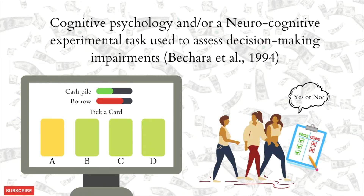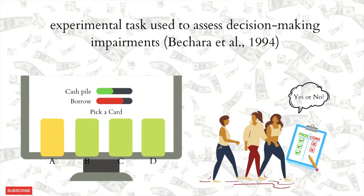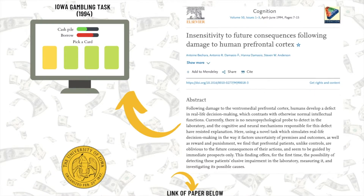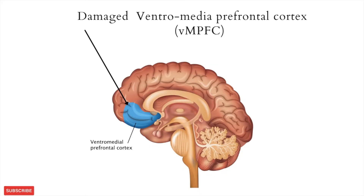The Iowa Gambling Task, or the IGT, is a very prominent cognitive psychology experimental paradigm used to account for and investigate impaired decision making processes. It was first proposed and developed by Antoine Bechara and colleagues when they were researching at the University of Iowa in 1994. The motivation to build this task stemmed from the interest to study impaired decision making observed in individuals with damage in their ventromedial prefrontal cortex, or the VMPFC.